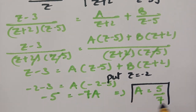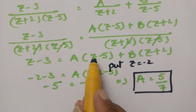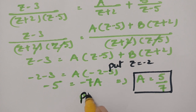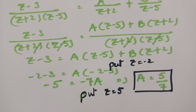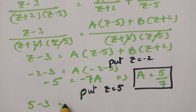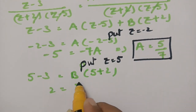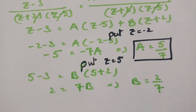I got the value of A as 5 by 7. Now I am going to make A equal to 0 to find B. I substitute Z equal to 5. This gives 5 minus 3 equal to B times 5 plus 2, so 2 equals 7B, and therefore B is equal to 2 by 7.